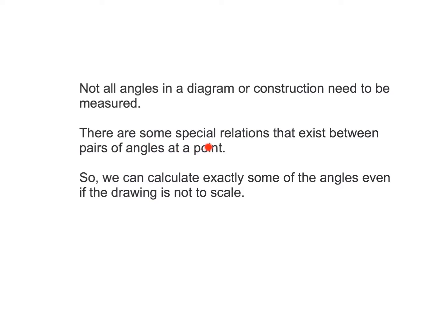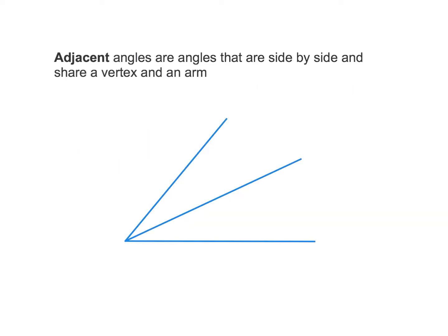Let's start by looking at some of the special relationships that exist between pairs of angles. The first set of angles we're going to look at are adjacent angles, and these are angles that are side by side, and share a vertex and also an arm. I've now labelled this diagram: the vertex is O, the arm over here is point A, the arm over here is point B, and the arm over here is point C.